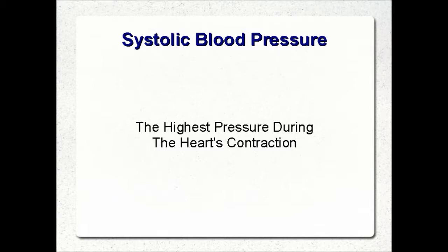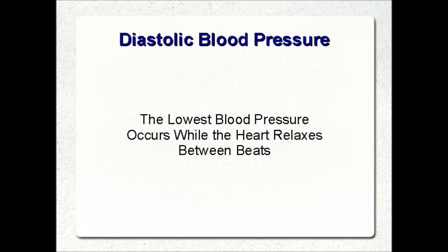Systolic blood pressure is defined as the highest pressure your blood vessels are exposed to during a normal heartbeat. After your heart contracts, it then takes a break for a moment and relaxes. During this relaxation period, it fills up again with blood. At the same time, the arteries shrink back to normal size due to a drop in pressure. This low pressure phase is known as diastolic blood pressure — the lowest pressure the arteries experience as the heart is relaxing.